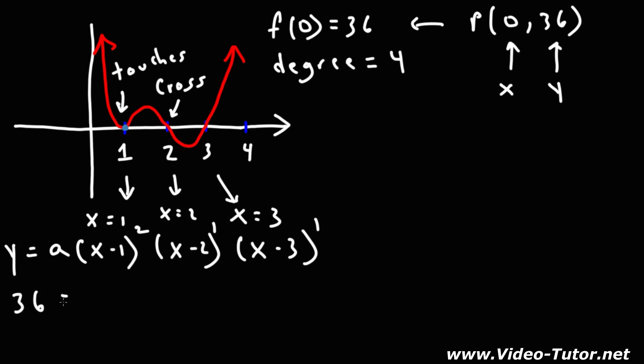So we're going to have 36 is equal to a times 0 minus 1 squared times 0 minus 2 times 0 minus 3. Negative 1 squared is just 1, 0 minus 2 is negative 2, 0 minus 3 is negative 3. Negative 2 times negative 3 is 6 and 36 divided by 6 is 6. So a is equal to 6.